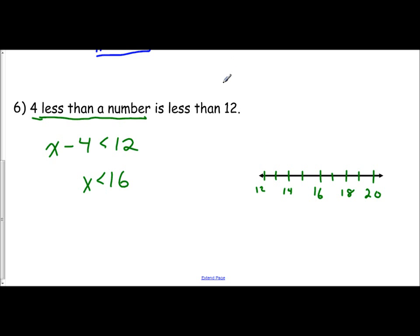And then when I graph this, less than 16 means open circle on 16 with an arrow going to the left. And so there is our solution set graphed on the number line.